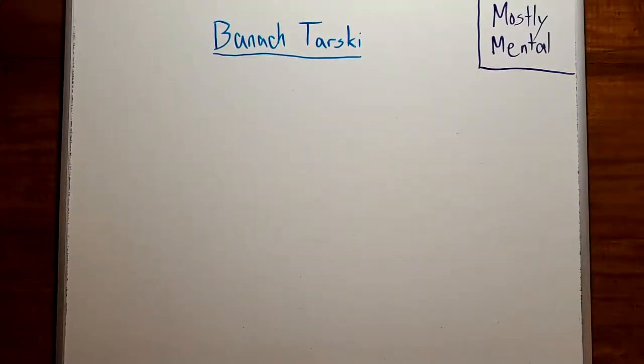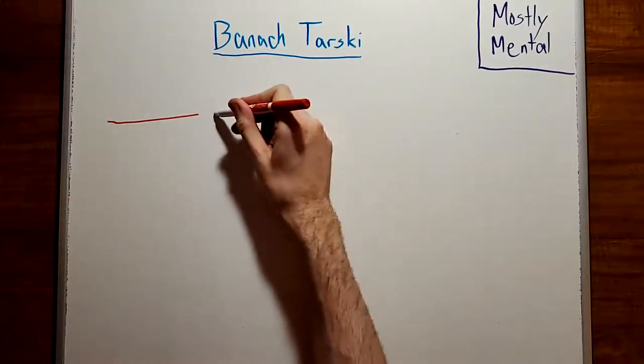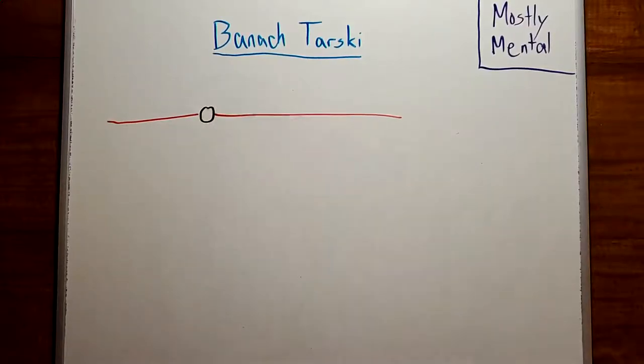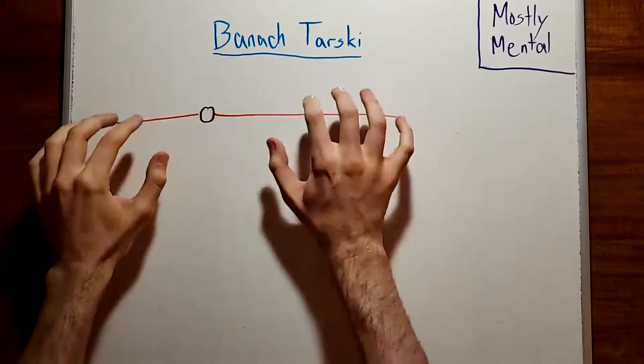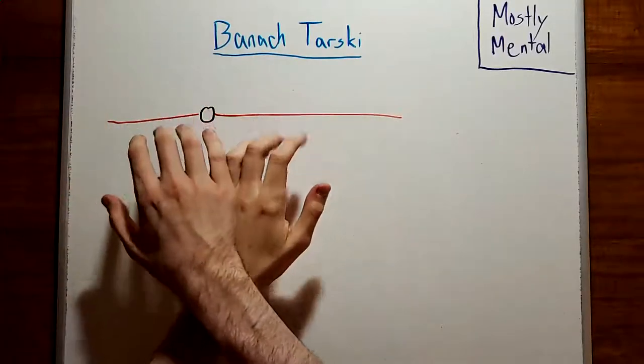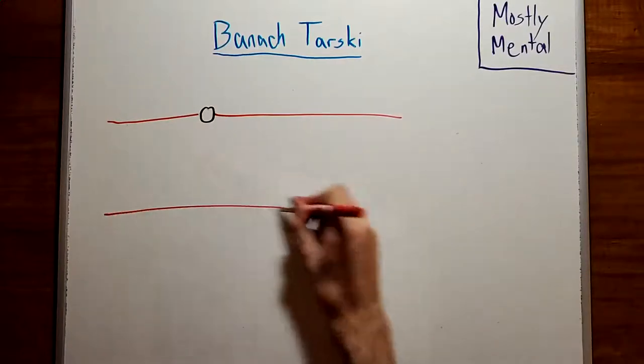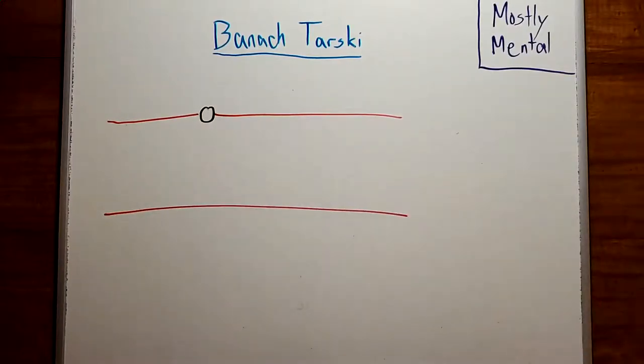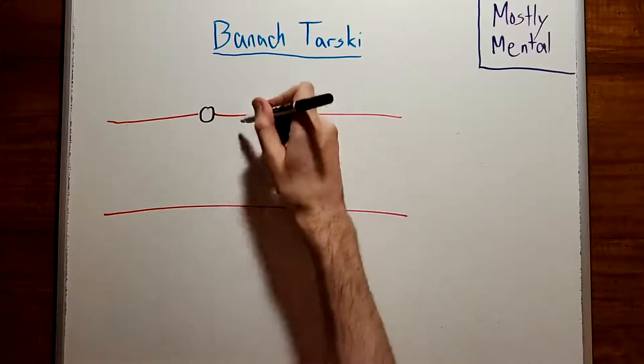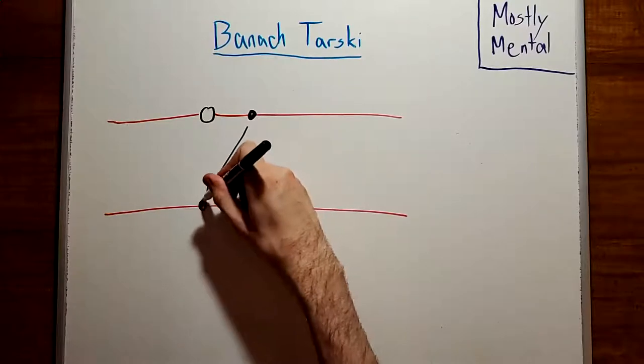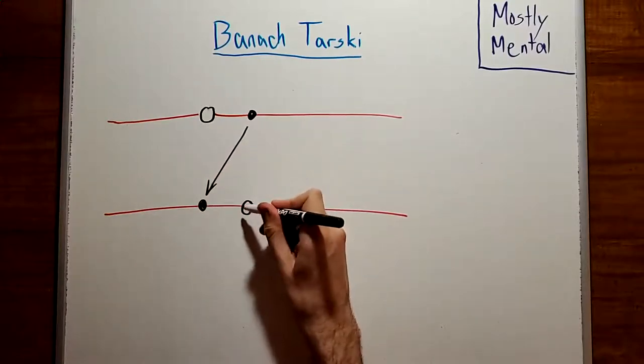First, let's look at a simpler problem to build some intuition. Let's say we have a line, like so, with one point missing. Is there some way to break what's left into pieces, and rearrange them to somehow cover that hole, so we end up with a solid line when we're done? Well, we could take a point from somewhere over here, and move it to fill the hole, but that creates a hole over here.